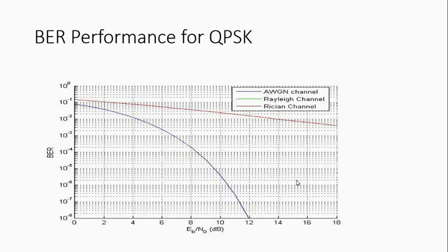This is the plot for the BER performance of QPSK. The blue line shows the performance of QPSK in AWGN channel, and the green and red lines which coincide show the performance of QPSK in Rayleigh and Rician channel. The diversity order and Rician factor were not taken into consideration when plotting this curve. This shows that the performance of QPSK in presence of AWGN channel is better than in presence of Rayleigh or Rician channel.